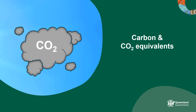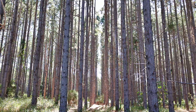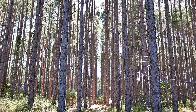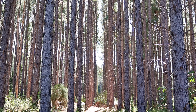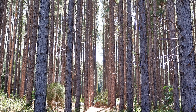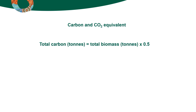Calculating the carbon sequestered by a forest is an increasingly common reason to measure trees and forests. With the value of total forest biomass that you have calculated, it is an easy process to estimate both the carbon content and CO2 equivalent of your forest. Total forest biomass is converted to carbon by applying a carbon factor, which estimates the proportion of dry biomass that is carbon. Generally speaking, biomass is made up of around 50% carbon, so the carbon factor typically used is 0.5.